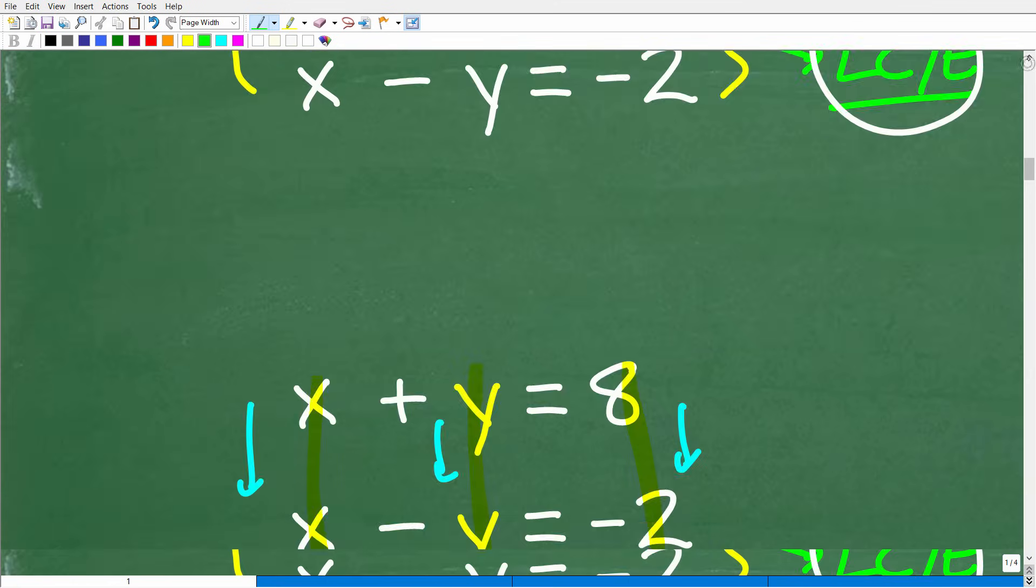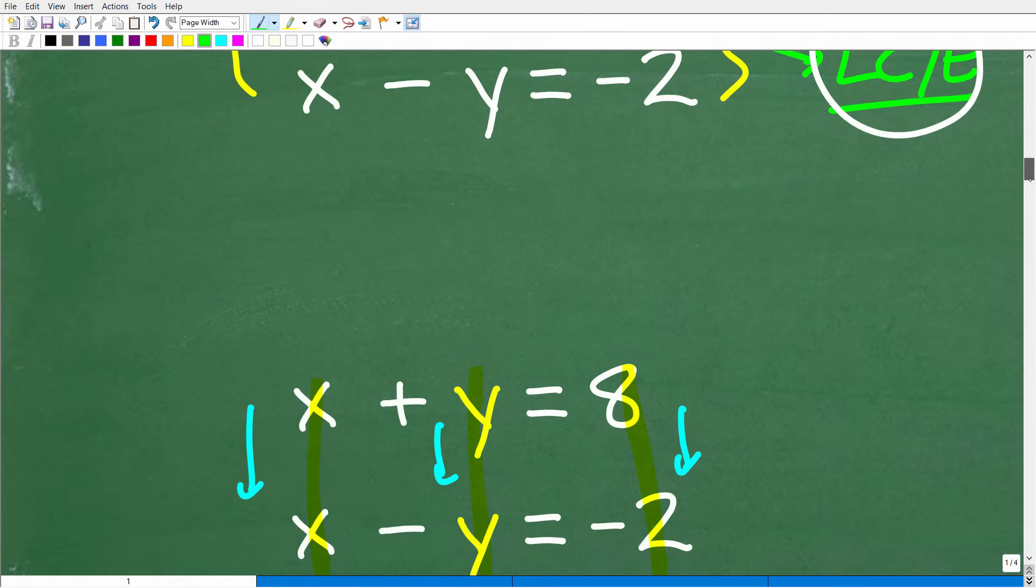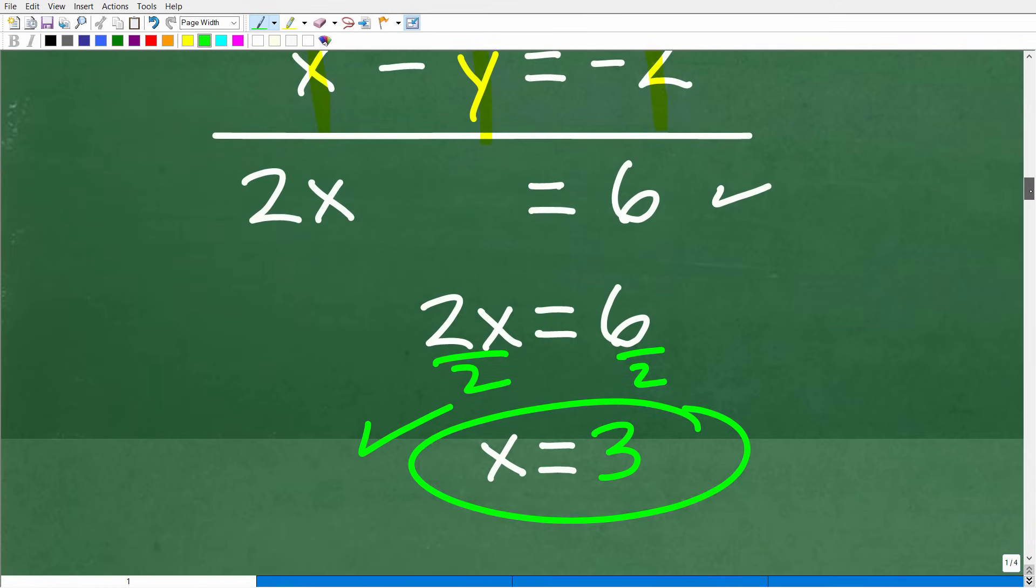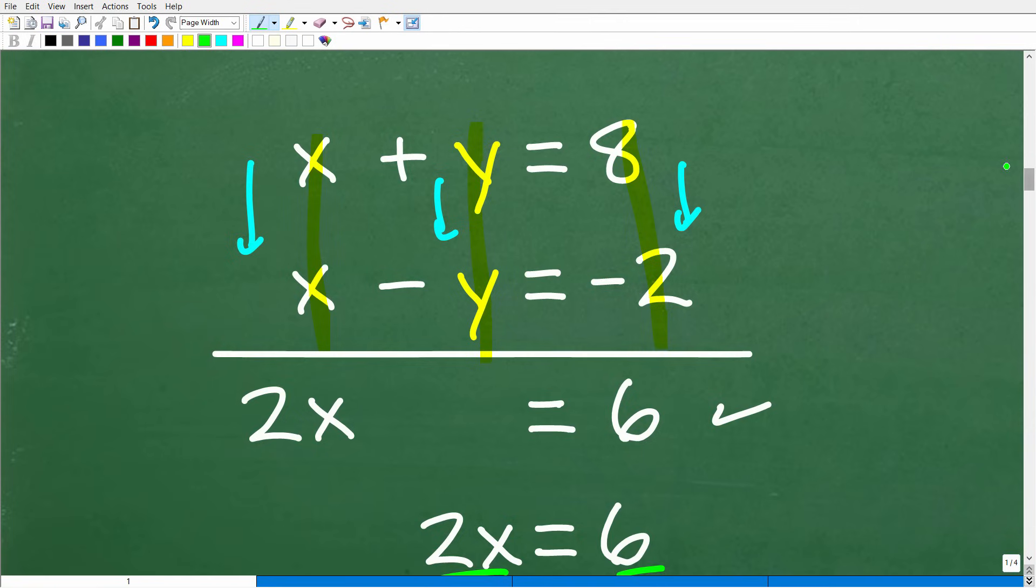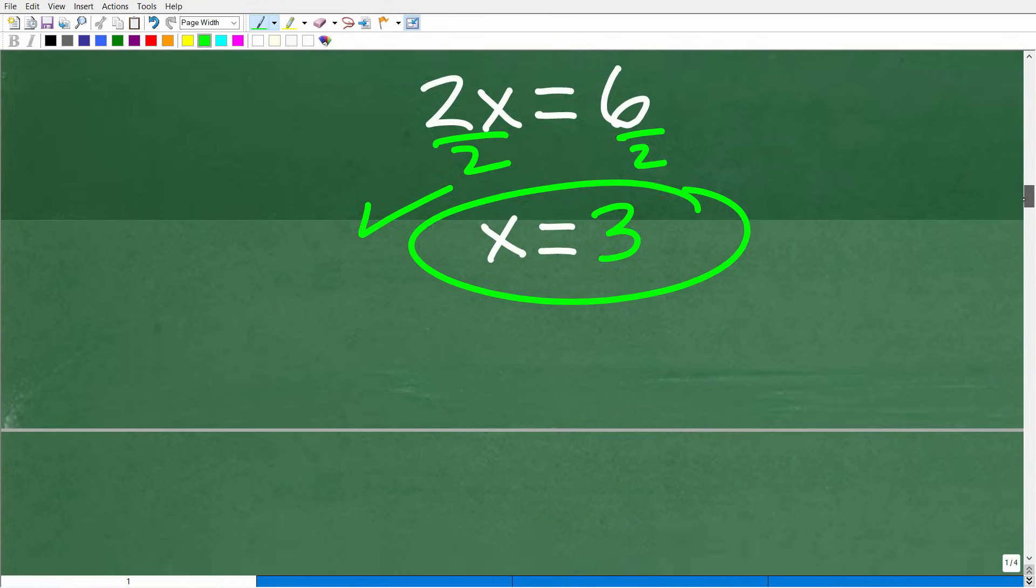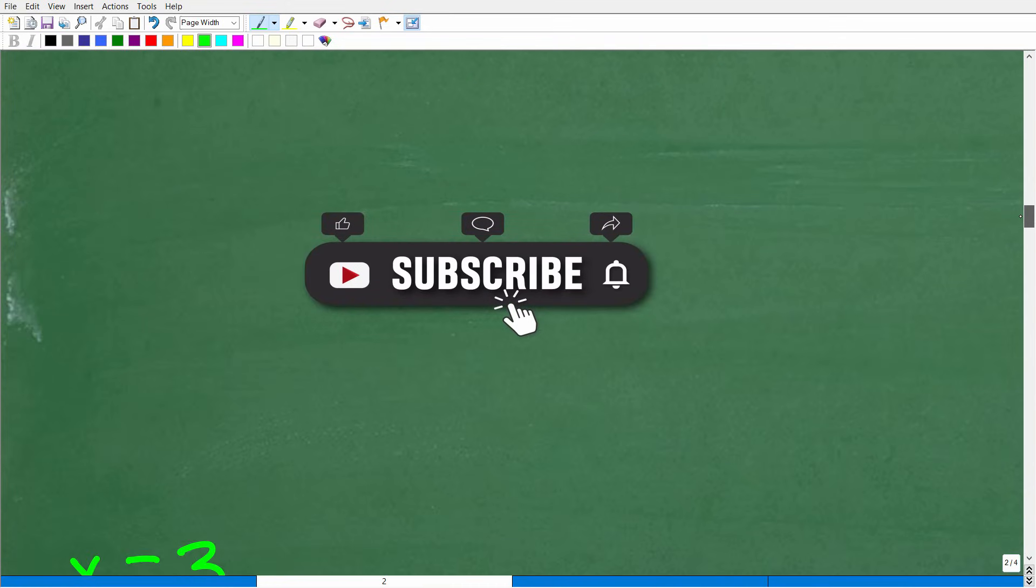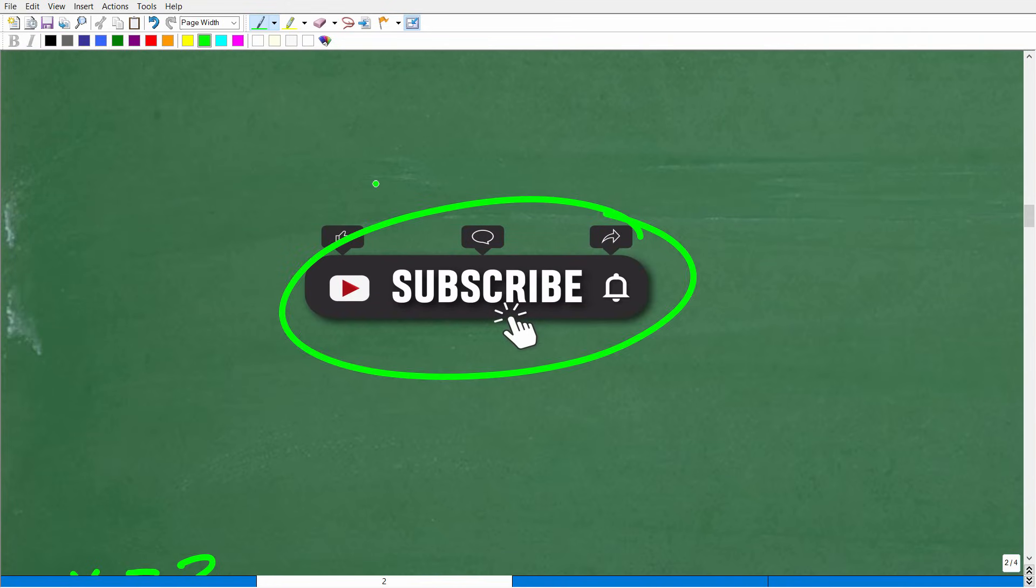All right, now that we have 1, whoops, kind of went too far right here. Now that we have 1 of the variables here, x is equal to 3. To figure out what y is equal to, all we have to do is plug in this 3 into this equation or this equation. So let's go ahead and take the next step right now, which of course is having you quickly subscribe to my YouTube channel. Don't you just love the way I kind of just sneak that in?